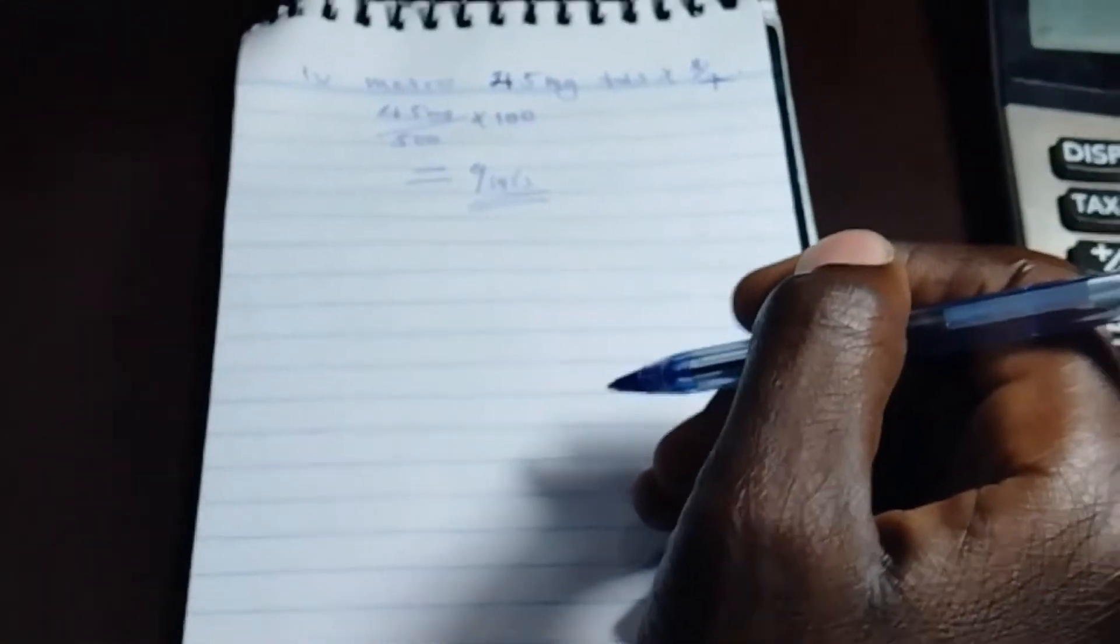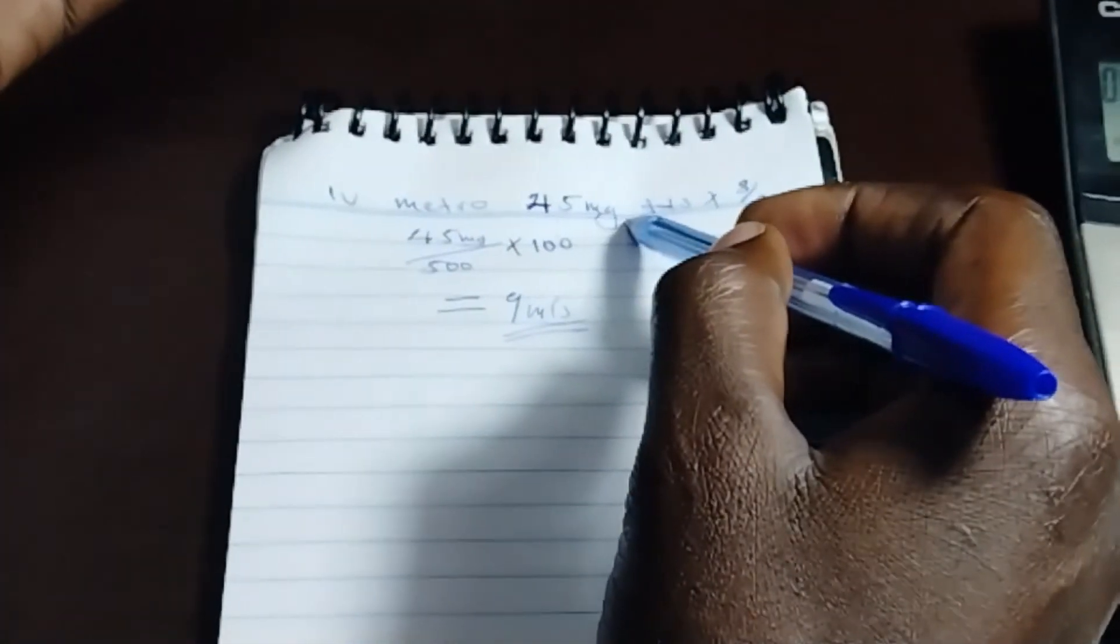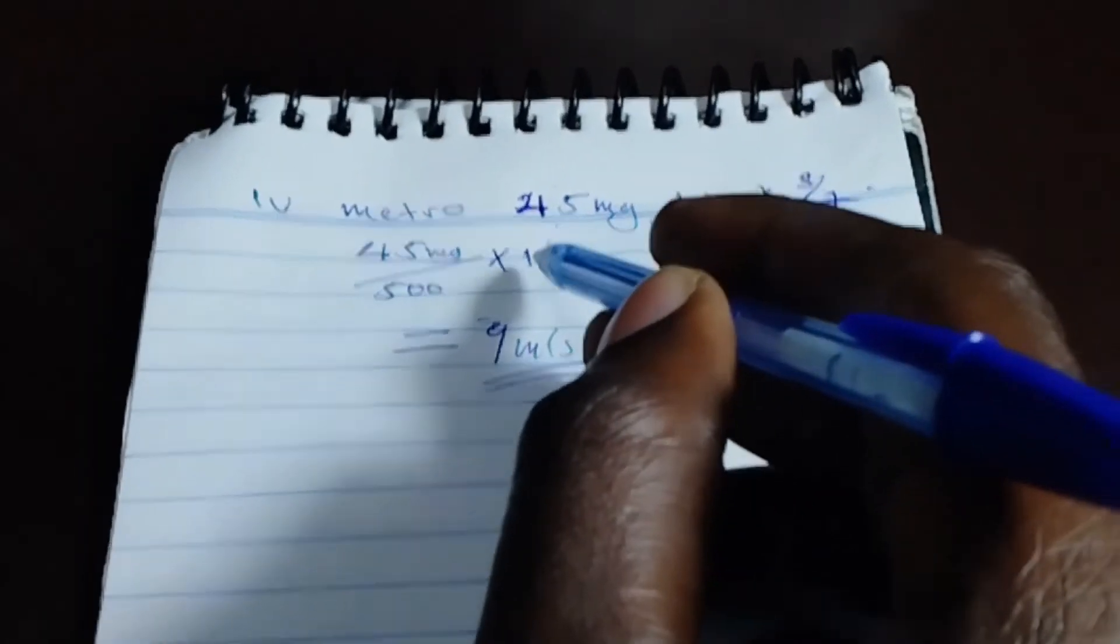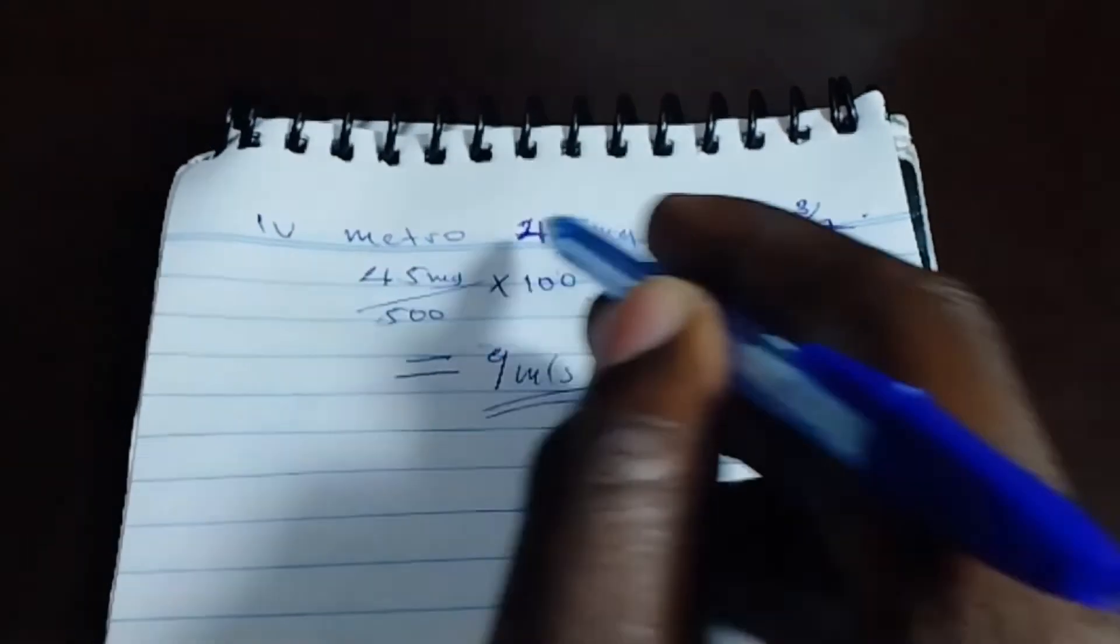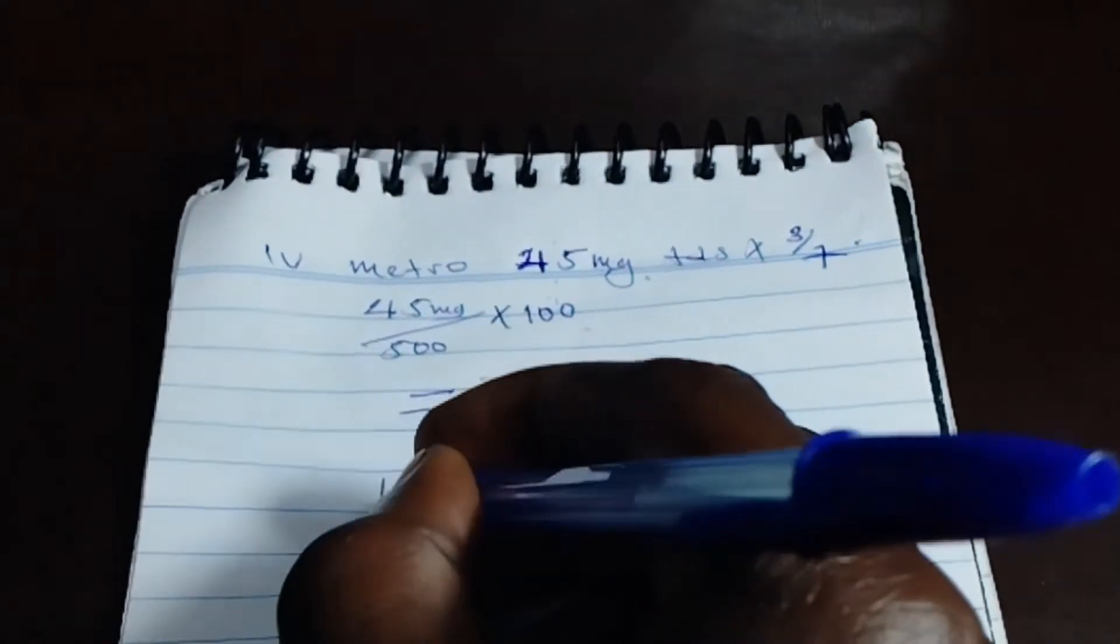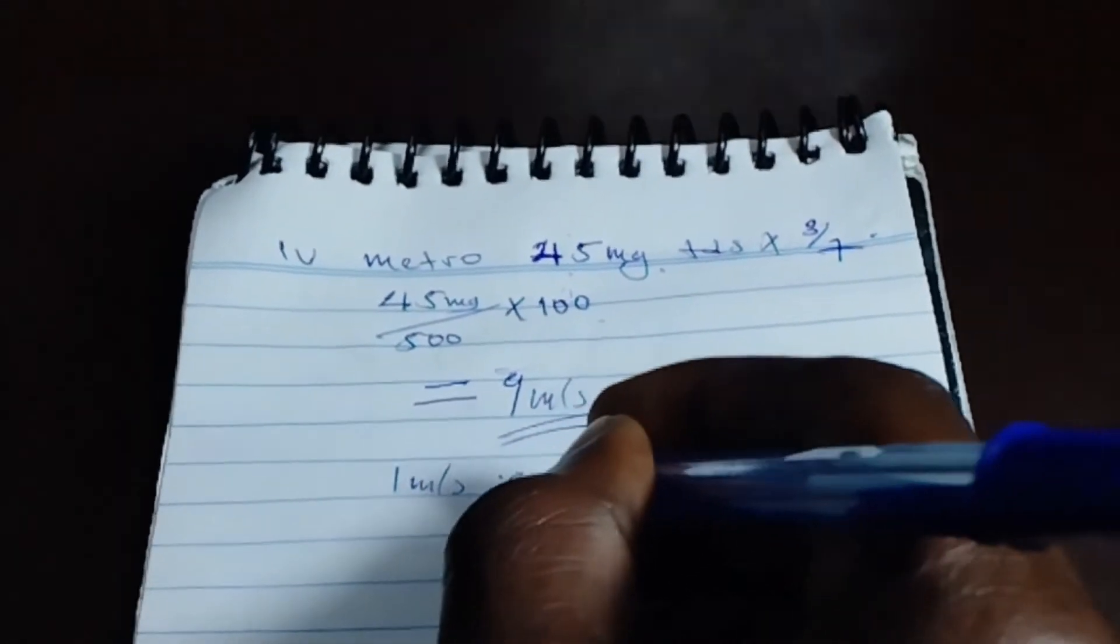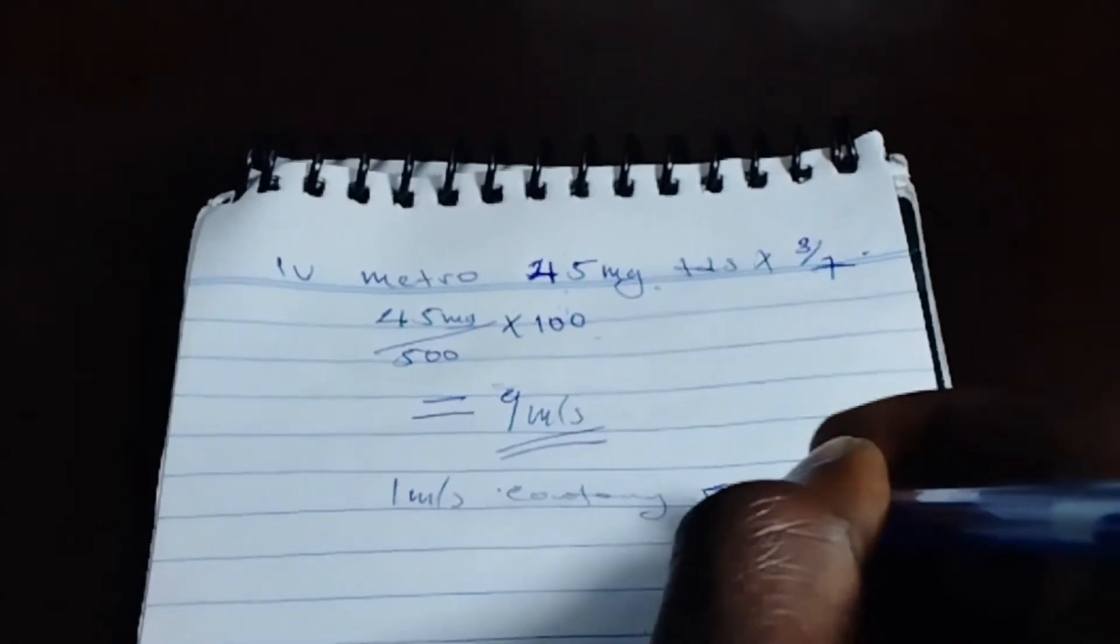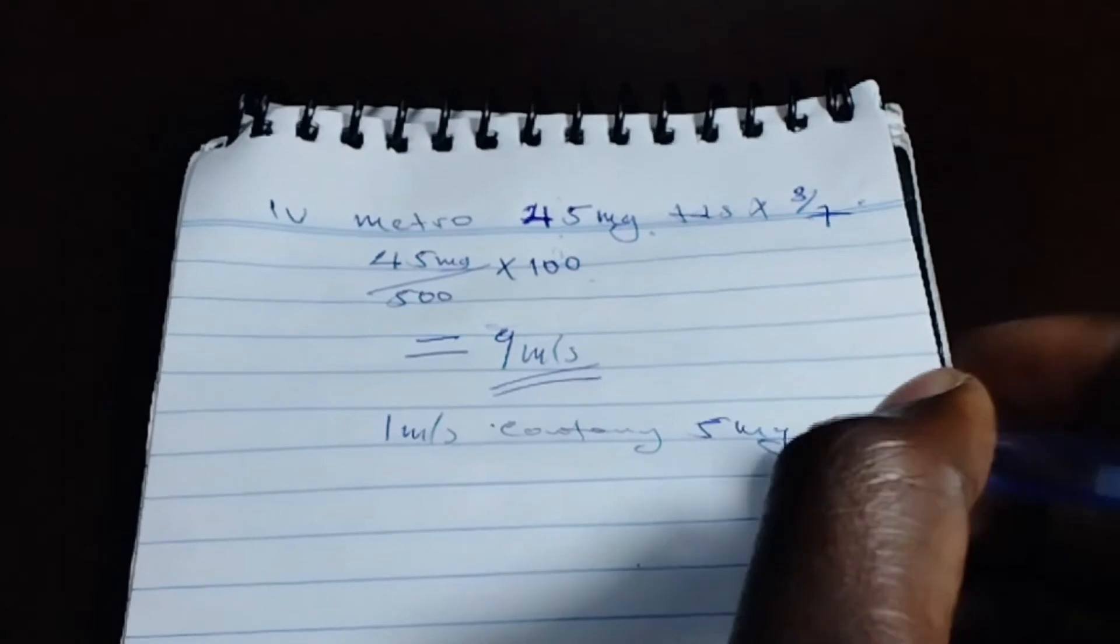Then there is another way of getting this without going through all this method. Because this medication, 1 ml is containing 5 mg of medication.